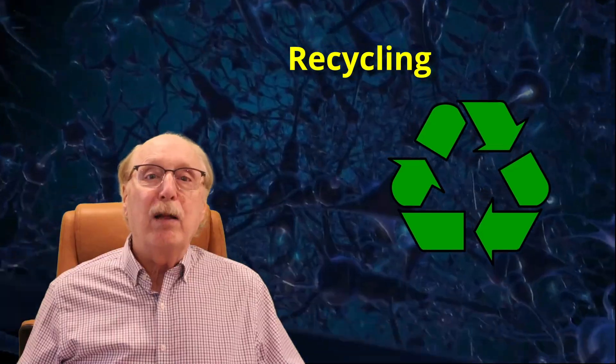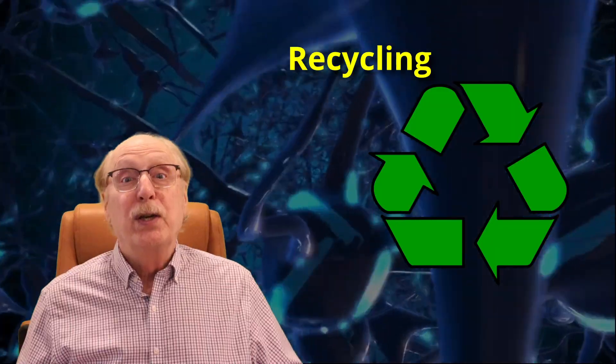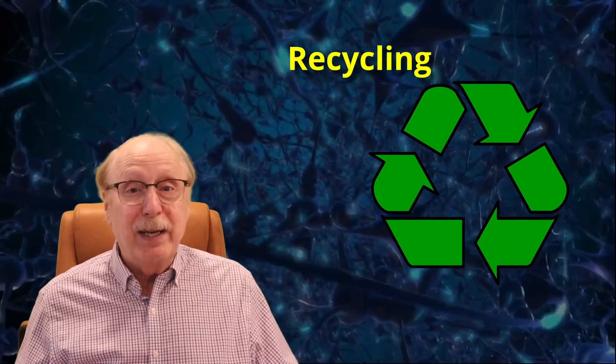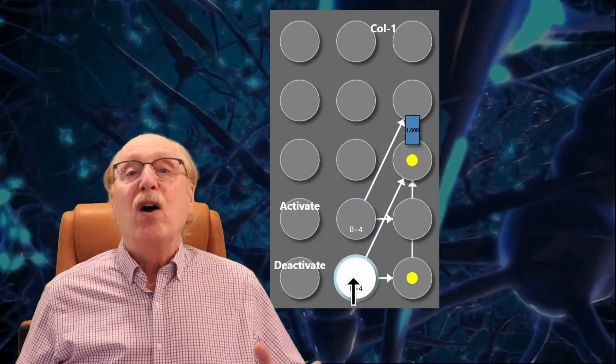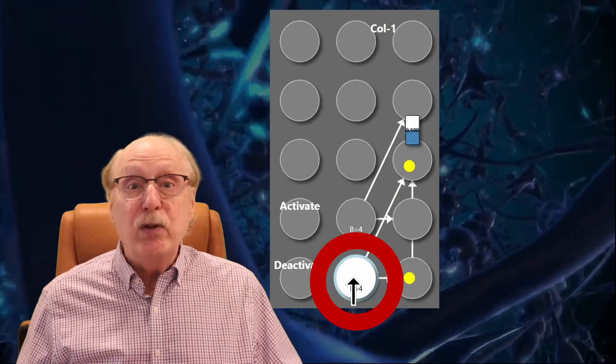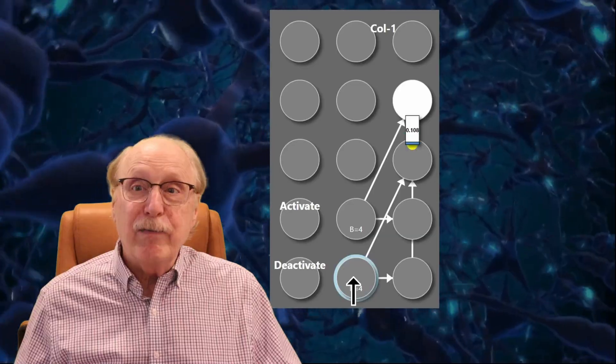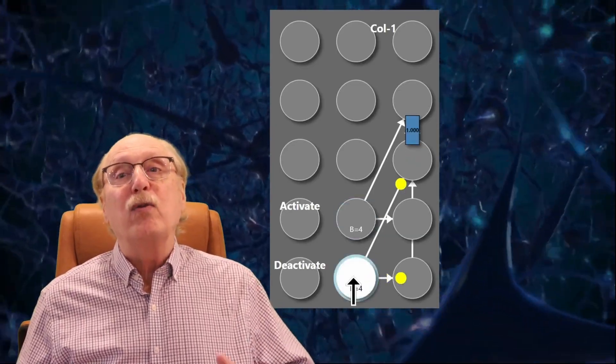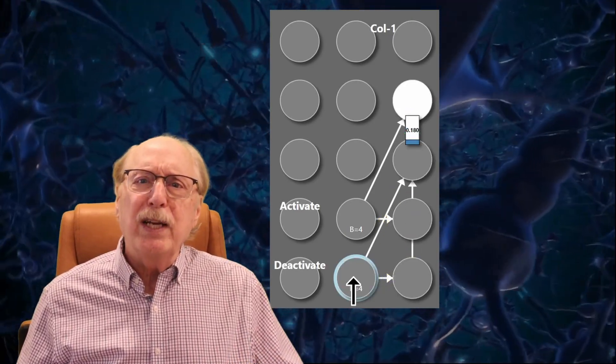But activating a column isn't enough. If the brain could only ever use a column once, it would run out of capacity pretty quickly. That's why we also need a deactivate circuit, a way to reset the in-use synapse and make a column available again. This is how the brain can forget. It's also how we recycle neural resources for new information. I'll go into more detail on that mechanism in future videos. But for now, just know that deactivation is just as essential as activation.